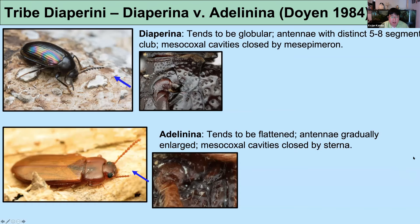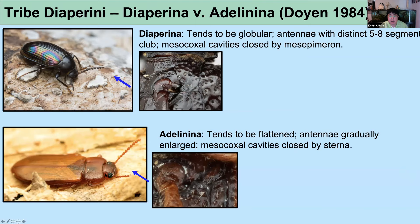They have very characteristic defensive gland reservoirs — widely separated, large paired structures with distinct annular rings — and a unique character within Tenebrionidae: females have a weird capsular sclerotized structure leading to the spermatheca. The Diaperina subtribe tends to have a clearly visible antennal club and their mesocoxal cavity is laterally closed by the mesoprimeron. The Adelenina tend to be dorsoventrally compressed flat beetles with gradually enlarged antennal segments, and their mesocoxal cavities are closed by the two sternites coming together.